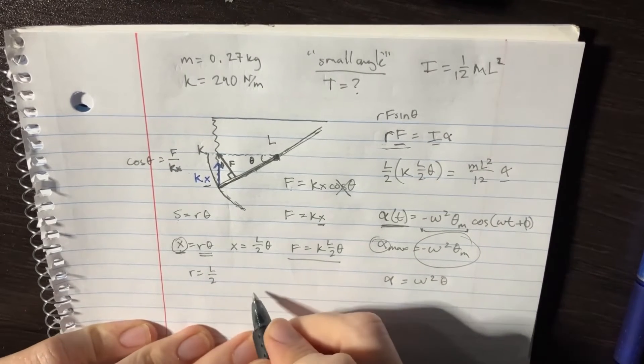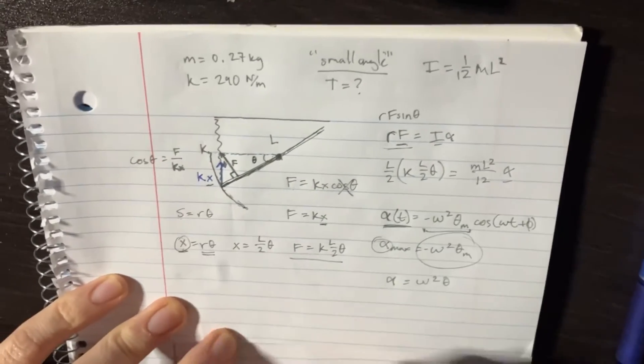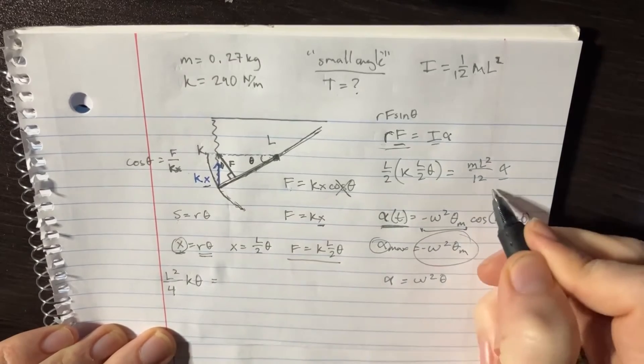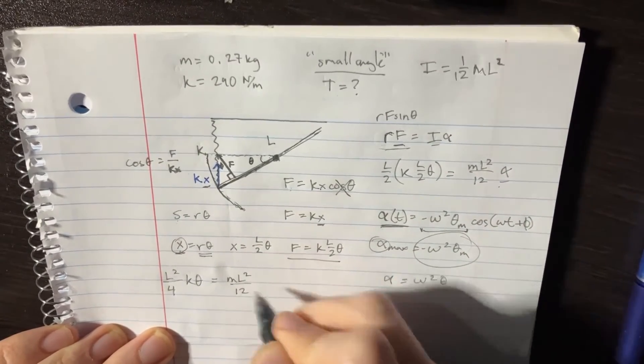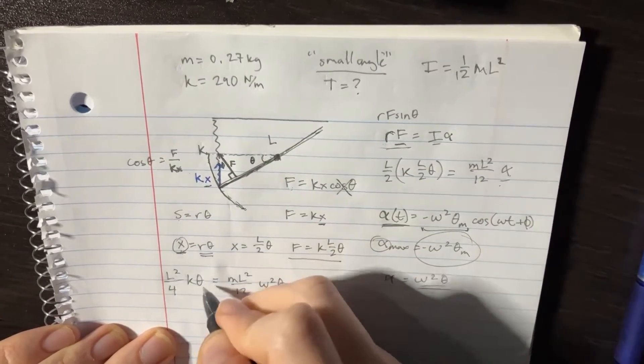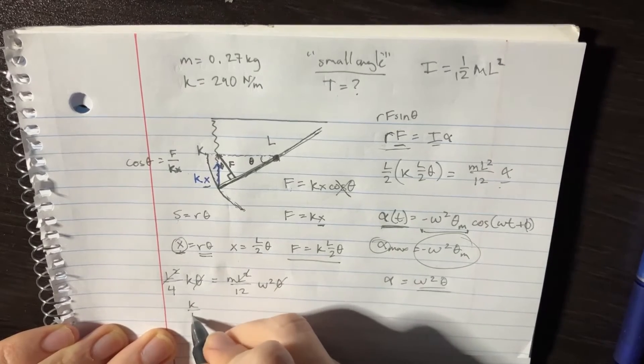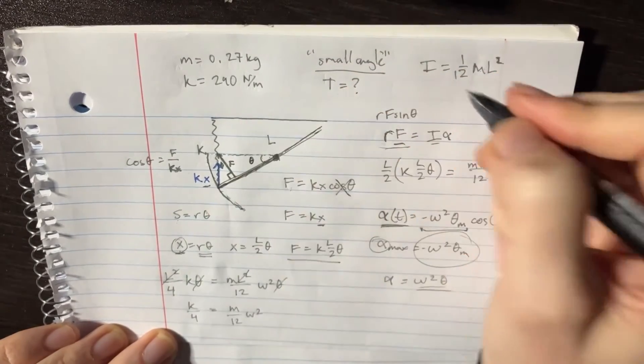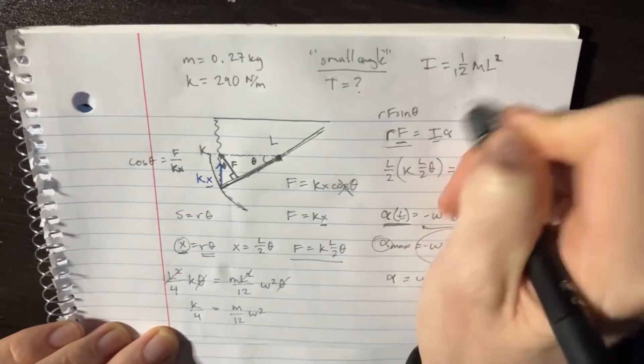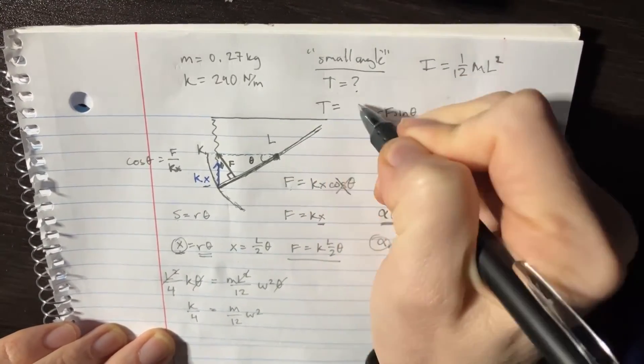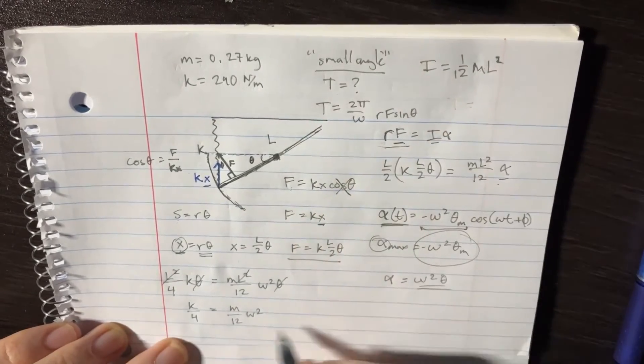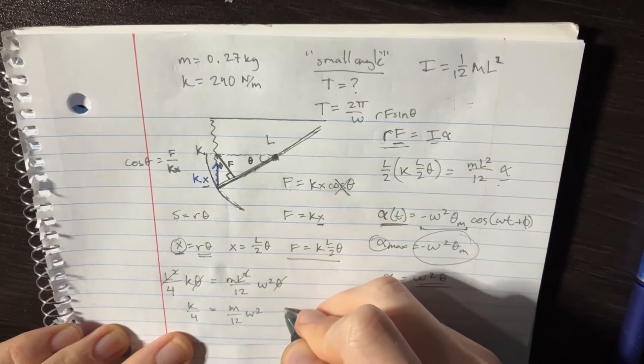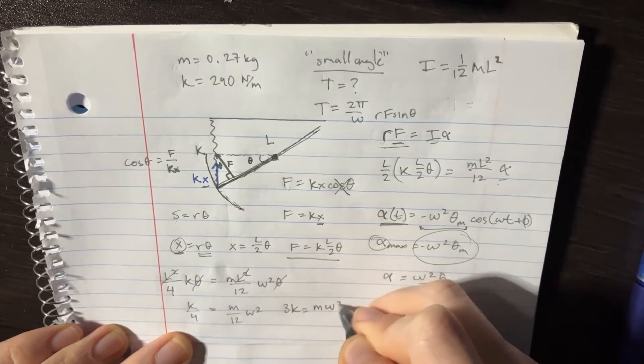And that's going to get us somewhere further. Let's start simplifying this equation. L squared over 4 K theta is equal to M L squared over 12, and then this is w squared theta. Thetas will cancel, L squares will cancel. We're left with K over 4 equals M over 12 w squared. Why do we need w squared? Because remember, the equation for T is actually T equals 2 pi over w. So if we can figure out w, then we can figure out T. We're so close guys! Look, this is just going to be multiply 12 on both sides and we've got 3K equals M w squared. Divide that by M, square it, and you're left with w.